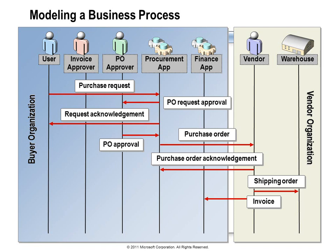Imagine what happens when we start getting more systems involved in this process. That purchase order information is getting from the procurement system to the finance system somehow, but since it's not in this diagram, it's more or less a workaround. The finance app needs approval to submit payment for this invoice, so it sends a message to a manager. We have the same issues as the original approval — the delivery of the message, the wait for the response, any connectivity issues. The more options that we can offer for handling these messages, the happier everyone will be.